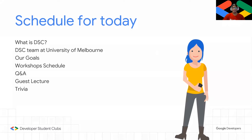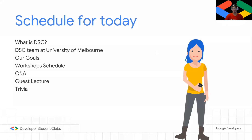This is our schedule for today. We'll be going through what is DSC, introducing our team at the University of Melbourne, showing our goals, and then giving you a quick tour of our workshop schedule, followed by a quick Q&A, and then a guest lecture from Google Developer Expert Max Sim, who will be introducing Flutter. We'll wrap it all up with a quick trivia, and of course there are prizes at the end.